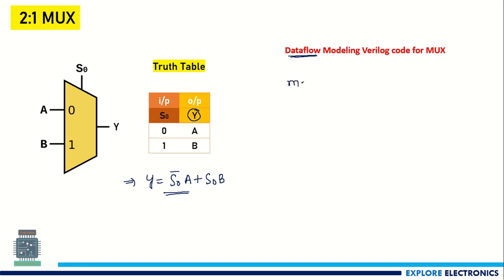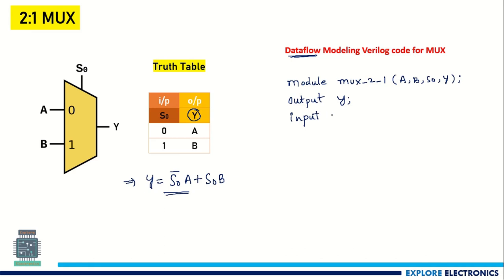As we know, any Verilog code starts with the keyword 'module'. We name this module 'mux_2_1'. Within the brackets, we list the input and output ports: A, B, S0, Y. We then declare which are inputs and which are outputs — 'output Y' and 'input A, B, S0'. Each statement ends with a semicolon. In data flow modeling, after declarations we use the keyword 'assign' to write the logical expression.